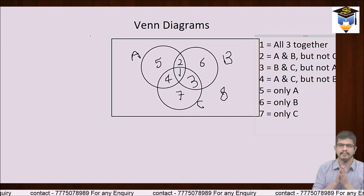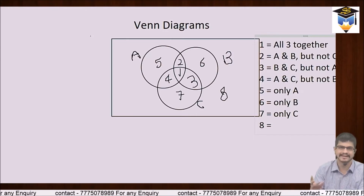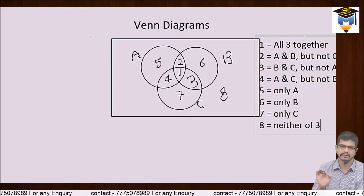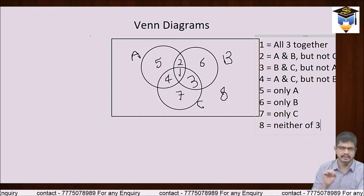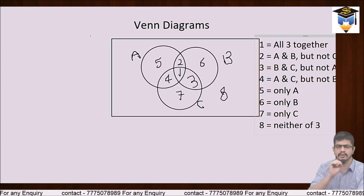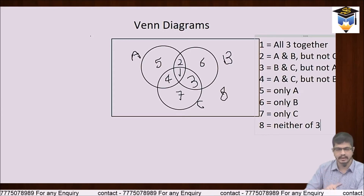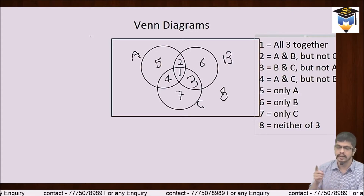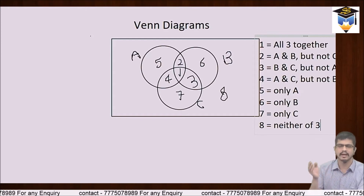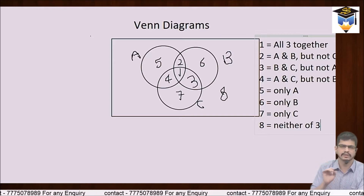Area 7 is only C. And area 8 — yeh sab ke bahar waale log hain — jinko na A pasand hai, na B pasand hai, na C pasand hai. Toh yeh 8 areas hain jinhe humein yaad rakhna hai. If you remember these 8 places clearly aur inki definition pata hai, then I am very much confident ki aapko set theory ke Venn Diagram se solve karne waale sab problems aa jaayenge.